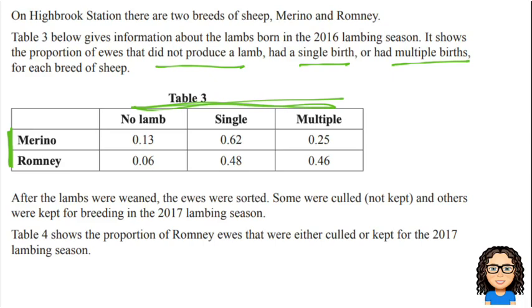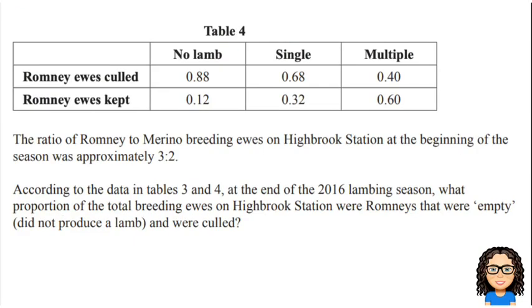So that's the first table. Then we're told after the lambs were weaned, some of those were not kept — so they were culled — and others were kept for breeding in the following year. Then we've got some information in a second table about whether the Romney ewes were culled or kept, and again whether they had no lambs, single, or multiple. So two sets of tables.